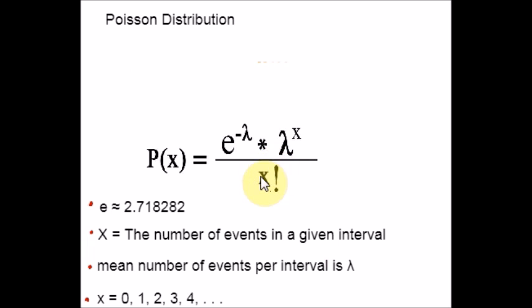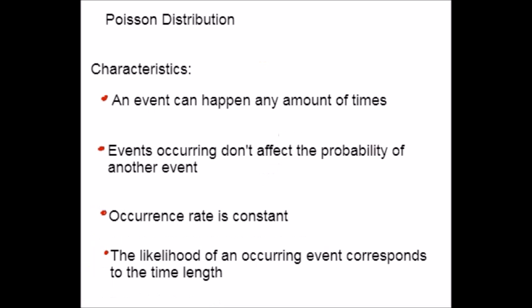Now, let us see Poisson Distribution Characteristics. Let us see the important characteristics of Poisson Distribution. First important characteristic is an event can happen any amount of times throughout a period.